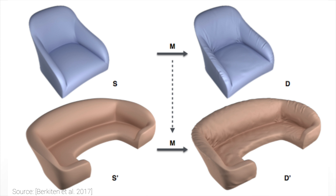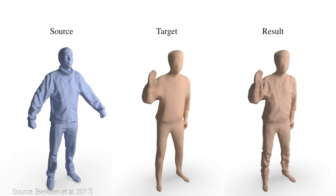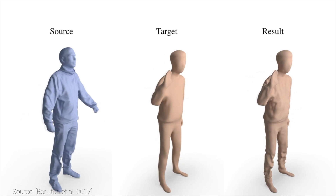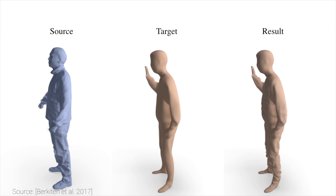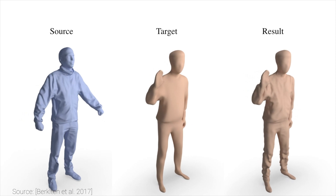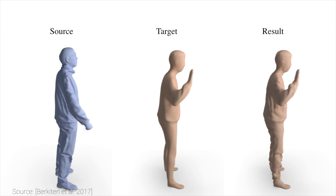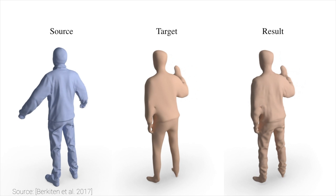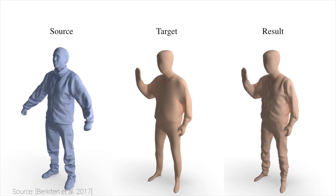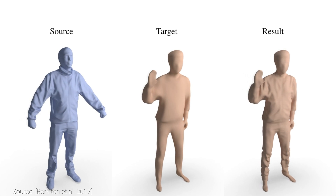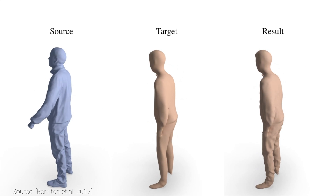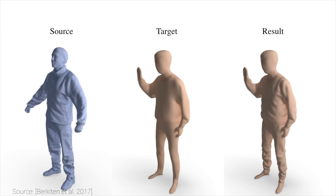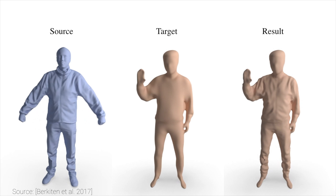This helps in the transferring process. As to creating the new displacements on the new model, there are several hurdles to overcome. One, we cannot just grab the displacements and shove them onto a different model, because it can potentially look different, have different curvatures and sizes. The solution to this would be capturing the statistical properties of the surface details, and use this information to synthesize new ones on the target model.